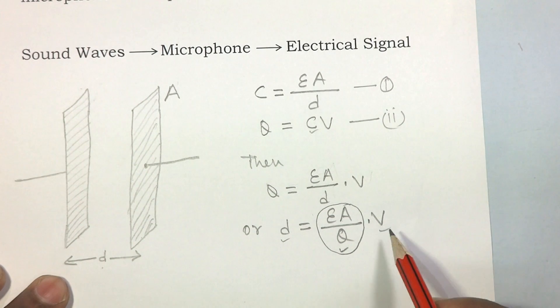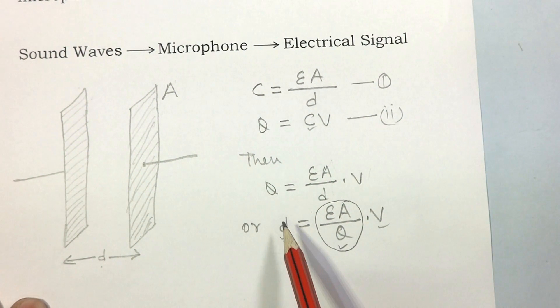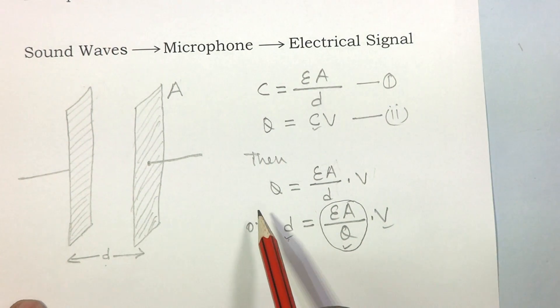When this plate vibrates, D is changed and the corresponding voltage V across the plates also changes. So it's clear V depends upon D. Only D and V are variable. This phenomenon is used in the design of a microphone.